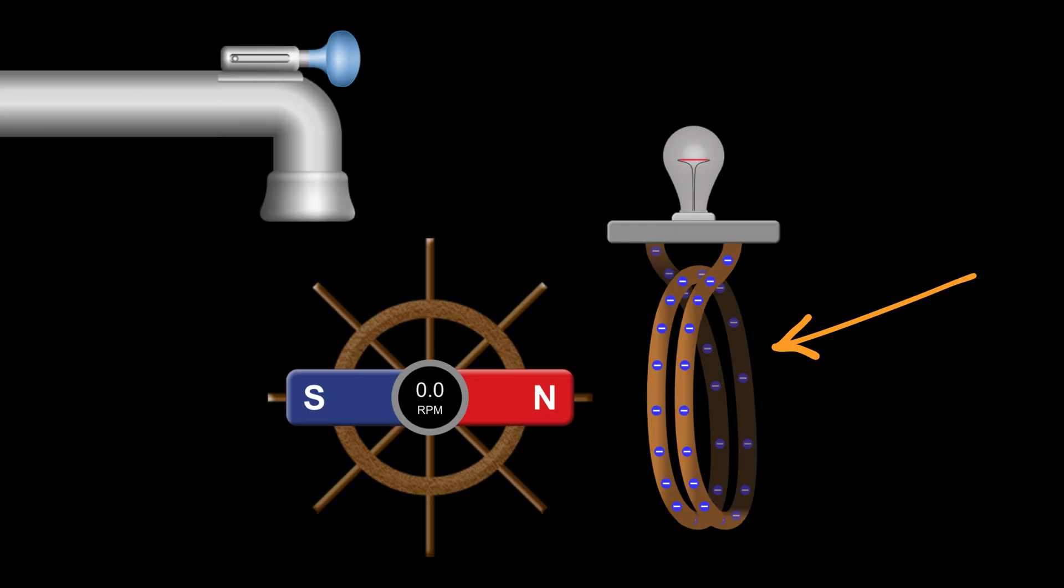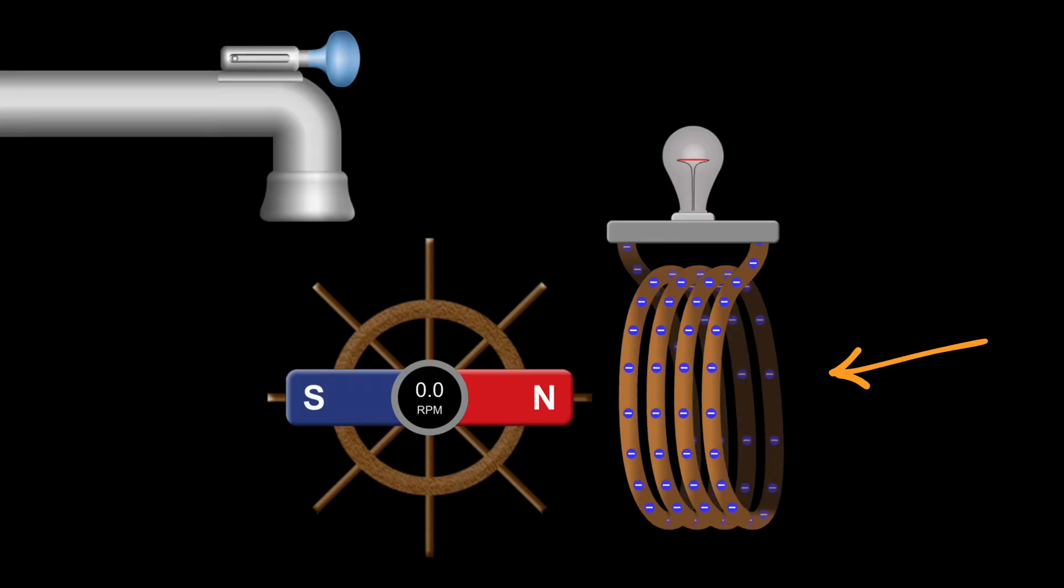First, your eyes go to the coil of wire. It has a few loops wrapped around. You think, what if I add more loops? So you carefully wrap the wire around the coil again and again, making more turns.